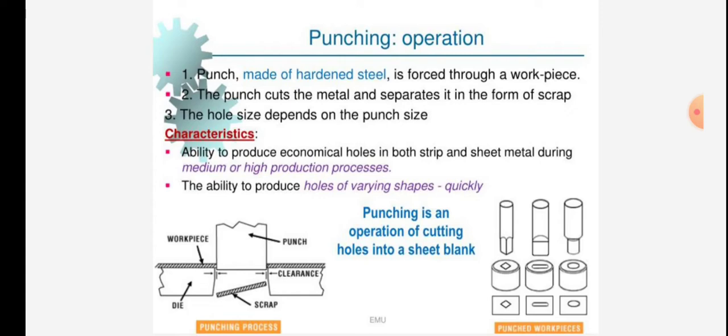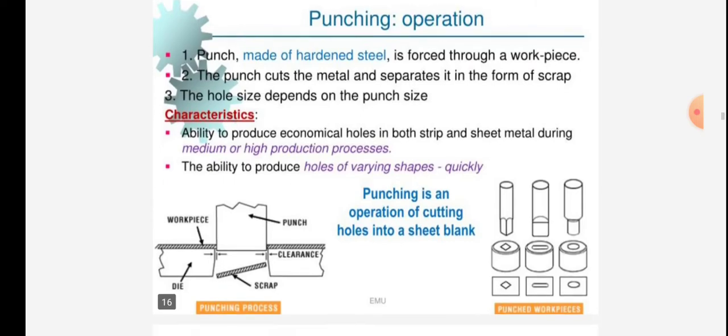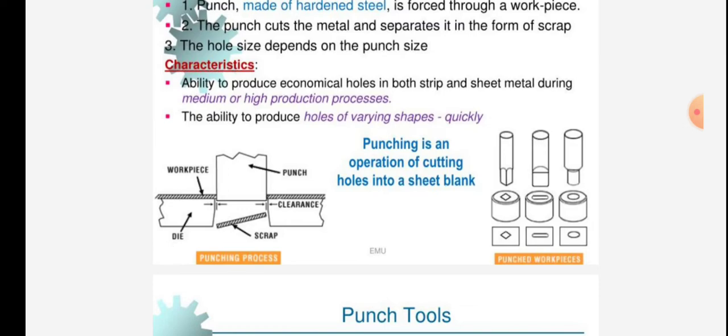The hole size depends on the punch size. Characteristics: ability to produce economical holes in both strip and sheet metal during medium or high production processes, and the ability to produce holes of varying shapes quickly.